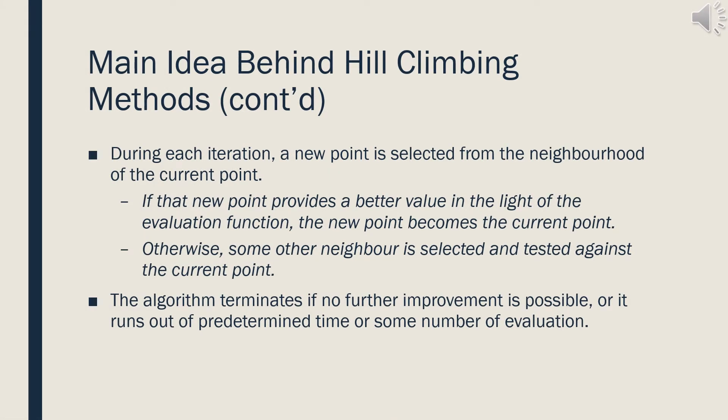We have an initial, namely current point, in the beginning. In each iteration, a new point is selected from the neighborhood of the current point. If that new point is better in the light of the evaluation function, it becomes the current point. Otherwise, some other neighbor is selected and tested against the current point. Whenever no further improvement is possible, or a predetermined time or number of evaluations is reached, the algorithm terminates.